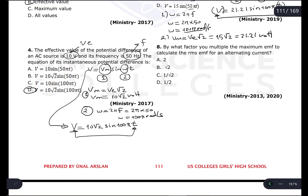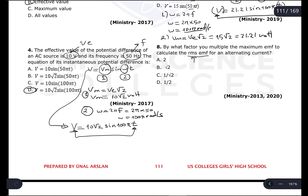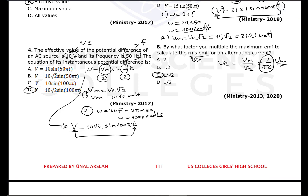Question number eight: by what factor do you multiply the maximum EMF to calculate RMS (effective) EMF? The equation is Veff = Vm / √2, or equivalently (1/√2) × Vm. So maximum value must be multiplied by 1/√2 to calculate the effective value or RMS EMF.